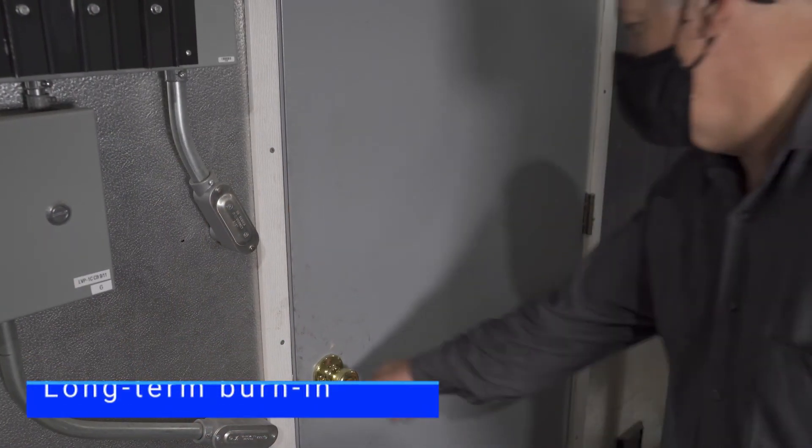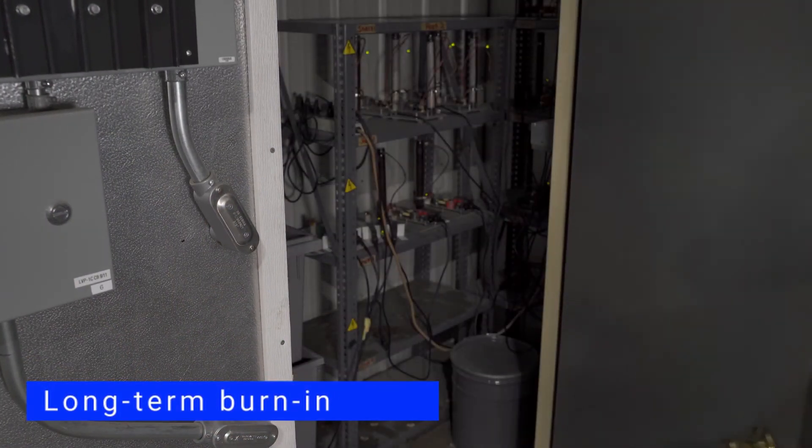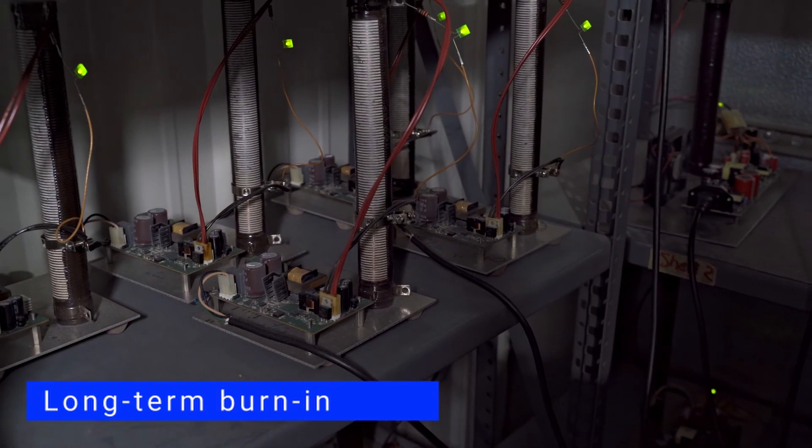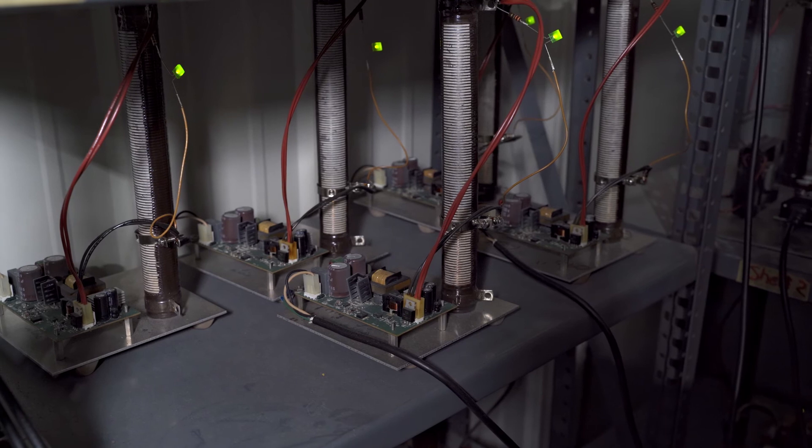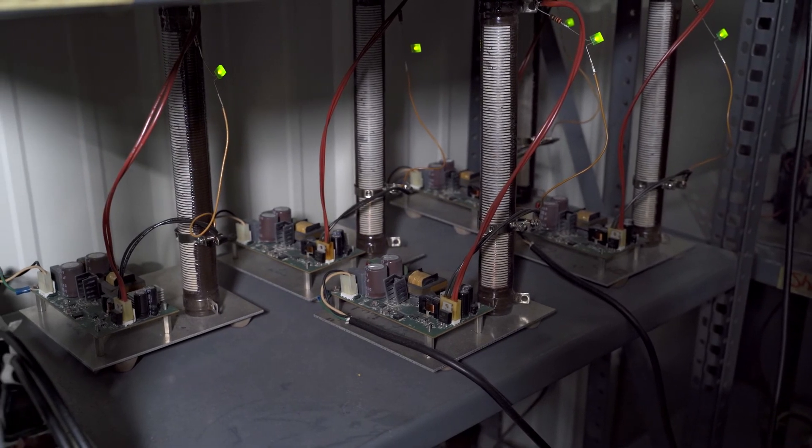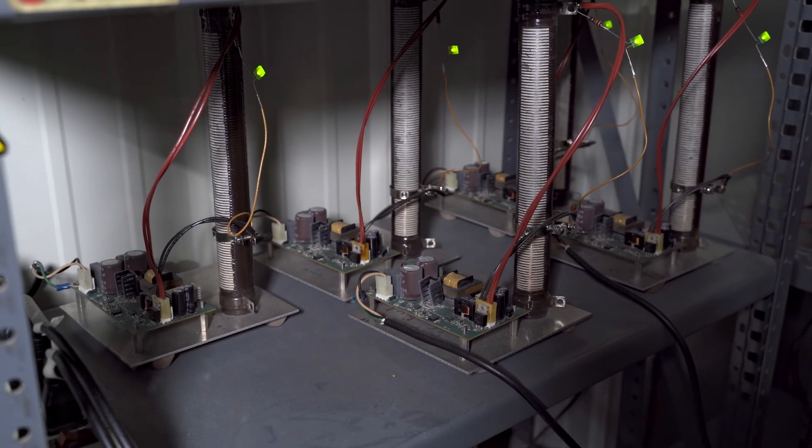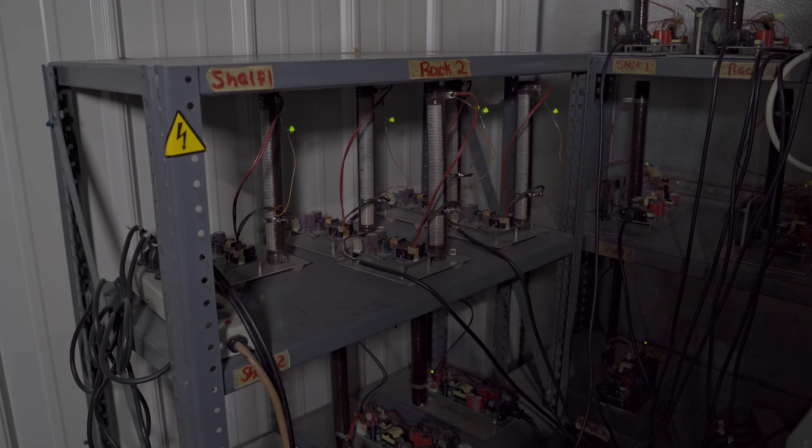Another type of burn-in is long-term burn-in to validate new designs. Here we burn in a number of the first units of a new product over many years to simulate the entire expected lifetime of the product, not just the early failure period. This lets us know early on if there may be problems a decade or more down the road and make necessary design changes now.